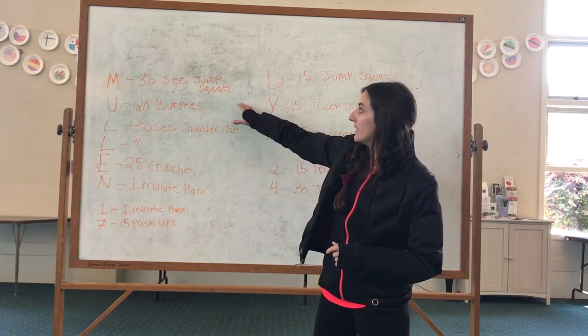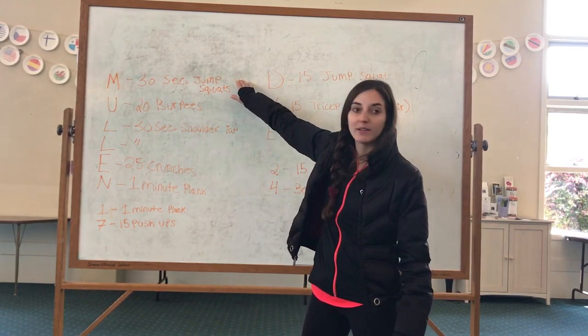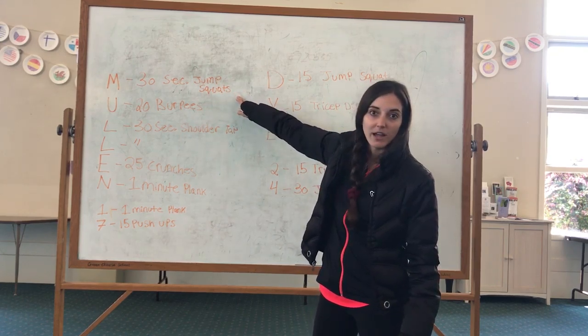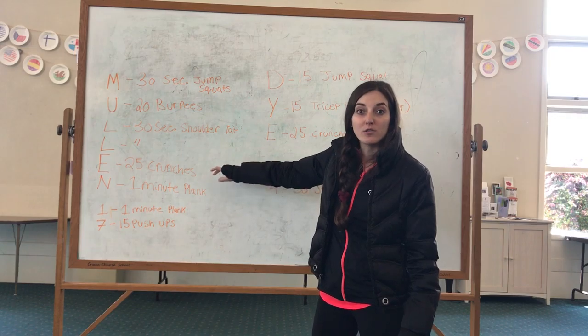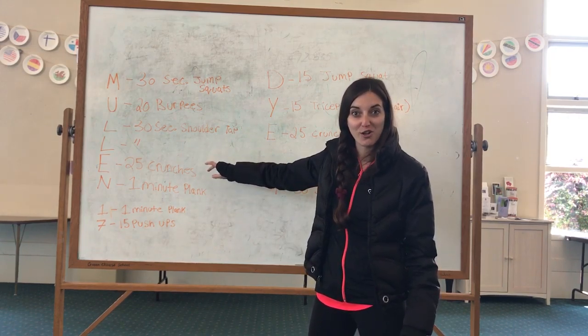So Mullen, I picked M and then that got me 30 second jump squats. And then you keep going down the list, spelling your name. Those with long names, brace yourself for a longer workout.